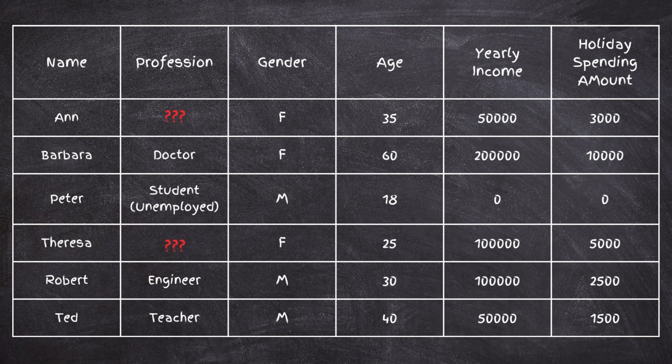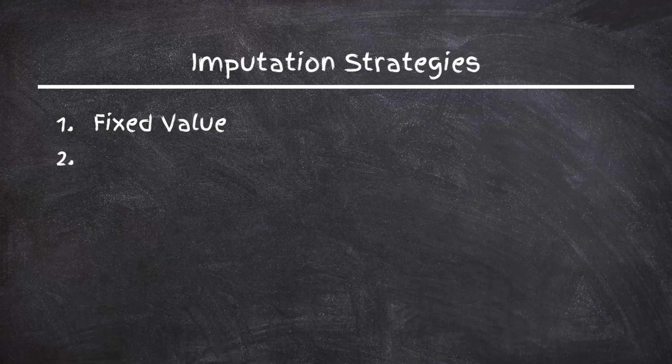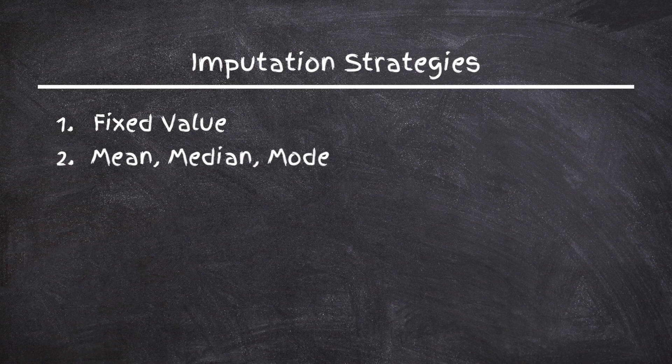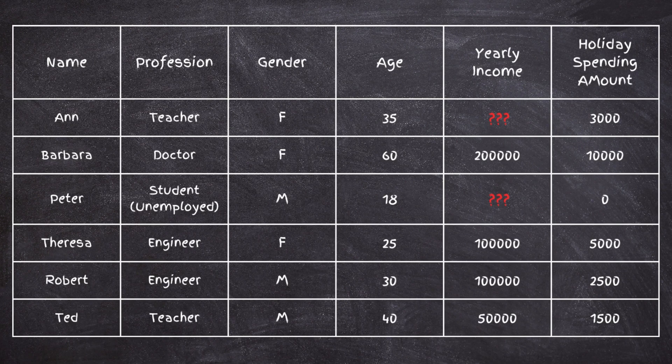The other approach is imputation — a strategy for filling in missing values. The first strategy is replacing missing values with a fixed value, such as replacing a missing profession with the word 'unknown.' The second strategy is replacing a missing value with the mean, median, or mode of that column. However, filling in the mean isn't always ideal because it can distort the dataset and add bias, since the mean income is probably not close to the correct income for specific records.